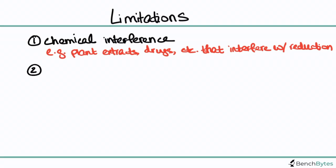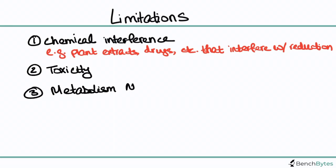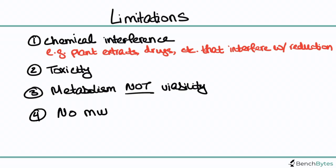The second limitation to think about is toxicity — the MTT reagent has actually been shown to be a little bit toxic to some cells. The third is what we've already discussed: this assay is really measuring metabolism, so that's something to always keep in mind. The fourth is that this assay is not able to be multiplexed — once you add your MTT reagent, the cells are going to die and form formazan crystals, so you can't do anything else with the cells.